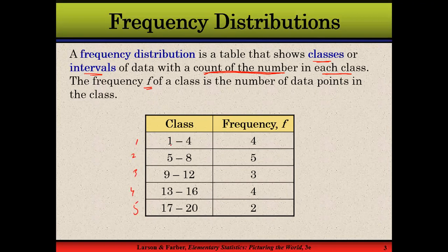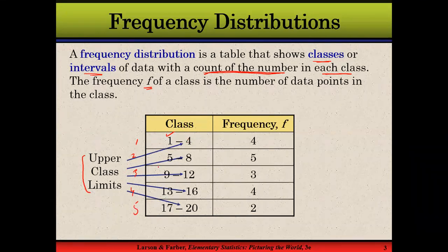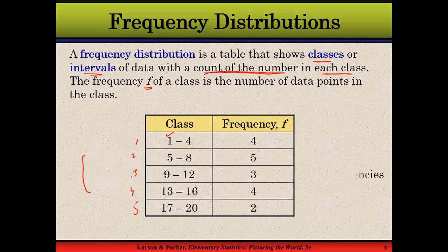These classes start from a point and end at a point, and they have their relevant frequency in front of them. The class starts from a value called the lower class limit. In the first class, one is the lower class limit; in the second class, five is the lower class limit; in the third class, nine is the lower class limit. The class ends at a value called the upper class limit: four, eight, and twelve are the upper class limits.